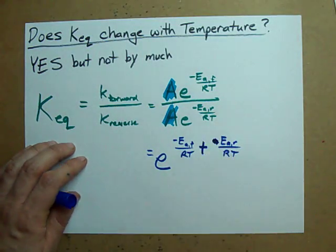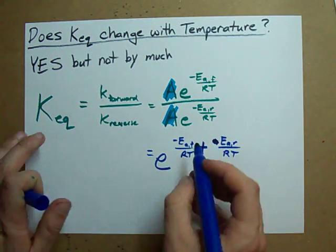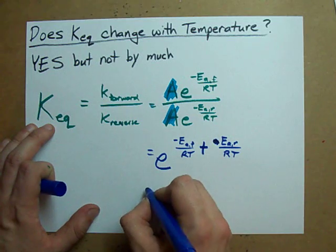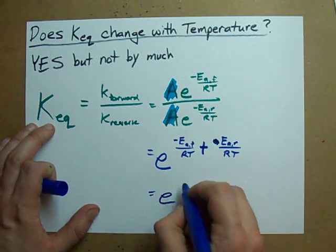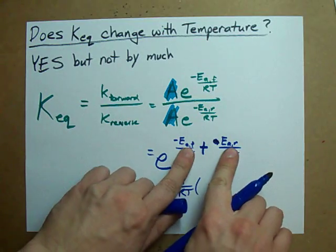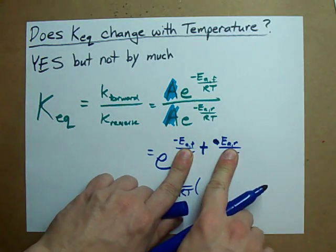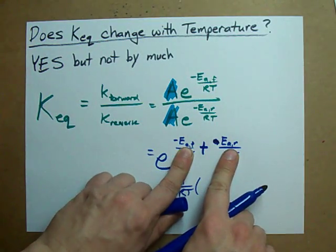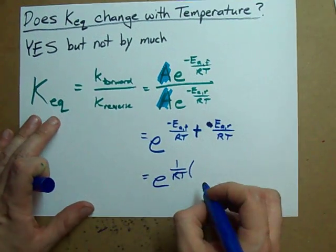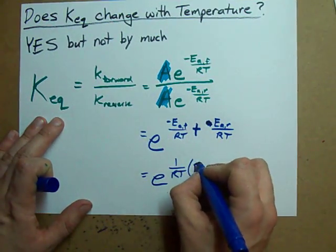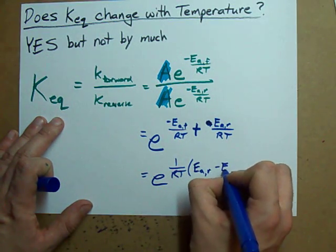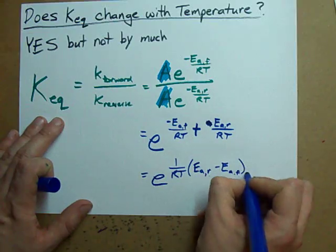The two minuses cancel each other out to make a plus, and we can factor out 1 over RT from each of these. When you factor out the 1 over RT, you're left with negative Ea of the forward reaction plus Ea of the reverse reaction — or reordering those terms: activation energy of the reverse reaction minus activation energy of the forward reaction.